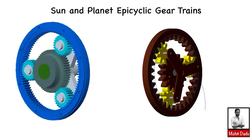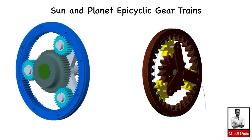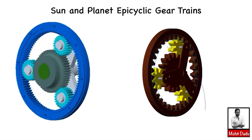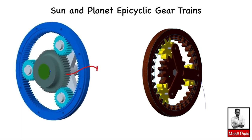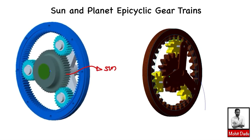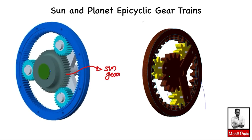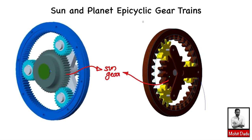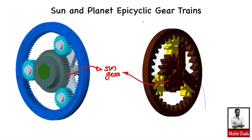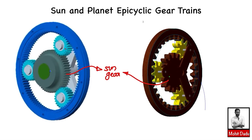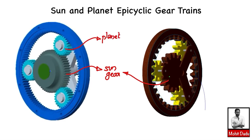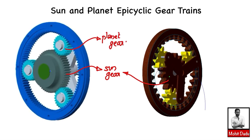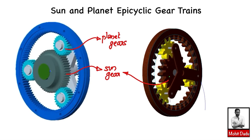Hello everyone. In this video we will be discussing the sun and planet epicyclic gear trains, and also solving a problem. Here you can see the animation of a sun and planet epicyclic gear train. There will be a central rotating gear known as the sun gear, and around the sun the other gears rotating are known as planets — like a sun and planet system. Here you can see three planet gears on each figure.